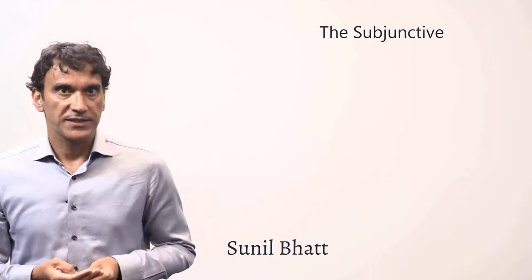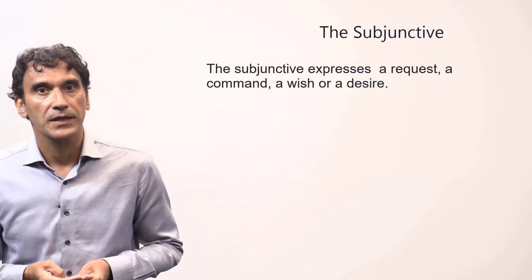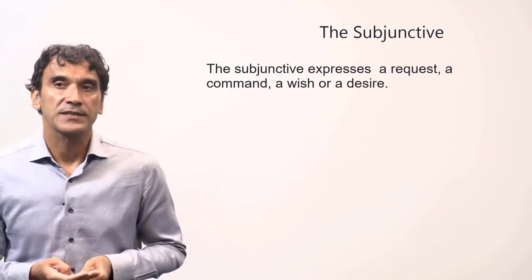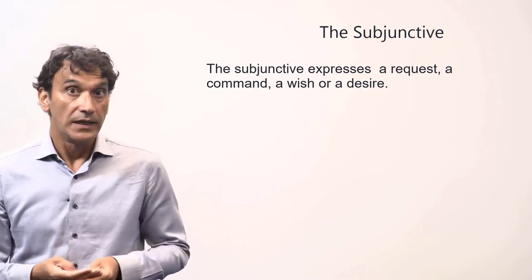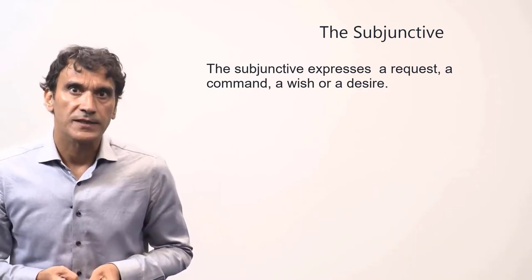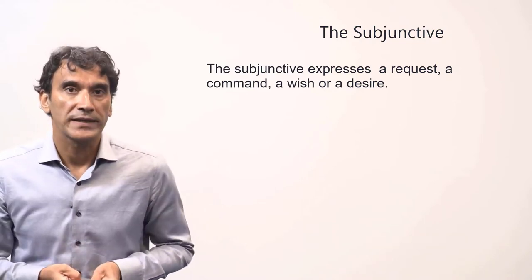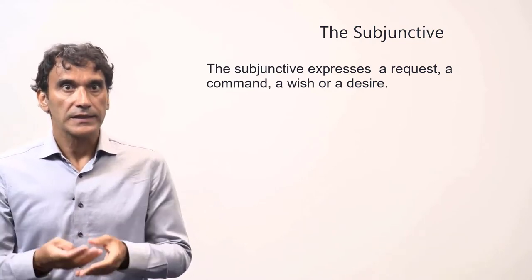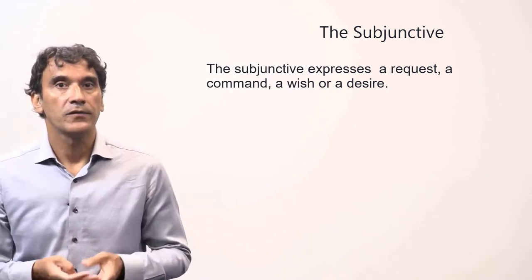The next grammar point is the subjunctive mood. We are taking the subjunctive mood right after the future tense because the subjunctive form of the verb can be easily derived from the future tense. The subjunctive mood expresses a request, a command, a wish, or a desire. The best way to understand the use of subjunctives is through its functions. Let's first learn how to make the subjunctive forms. The subjunctive is formed by dropping the ending ga, ge, gi from the future tense.